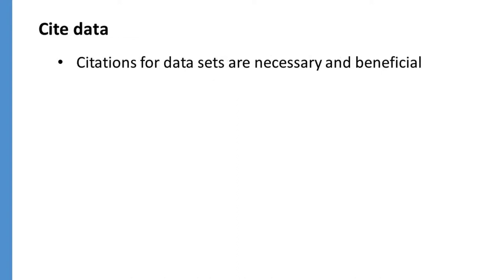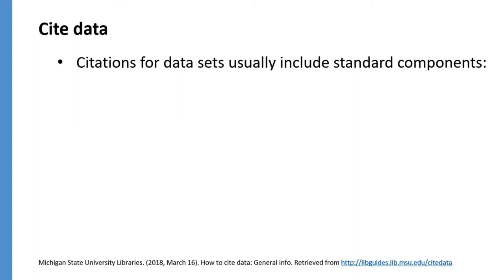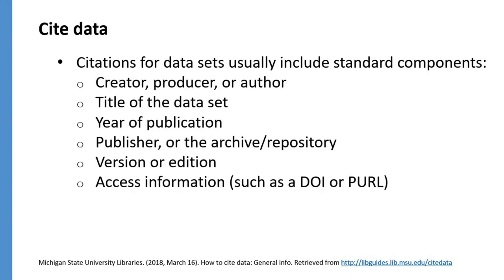When using data, it is also important to provide a citation to acknowledge the creator and direct others to the data you used. Citations for datasets usually include the same components as citations to other types of sources, such as the creator, the title, the year, the publisher, or the archive and repository where the dataset is held, the version, as well as access information.